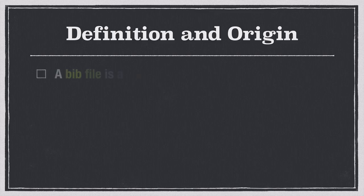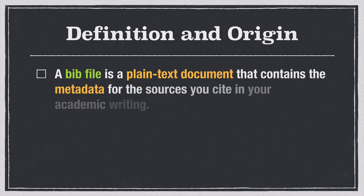A bib file is a plain text document that contains the metadata for the sources you cite in your academic writing. When I say plain text document, I mean a document that includes letters, characters, and numbers, but no formatting. So you get A through Z, 1 through 0, but you can't do things like bold and italics.